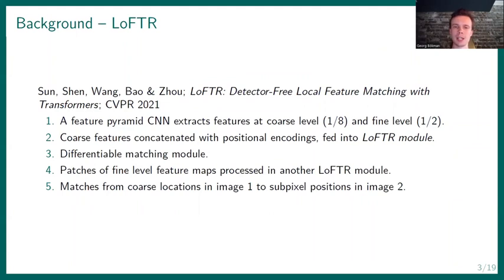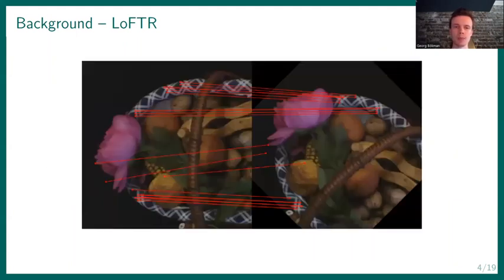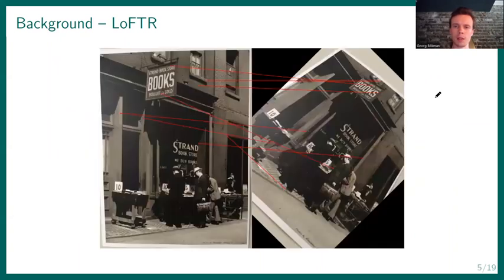Let's take a look at some failure cases of LoFTR on rotated images. Here's one. Here LoFTR only finds incorrect matches and the matches it finds are on this very repetitive structure. Here's another example. It only finds incorrect matches. And here we see a reason why. For instance, this match here is very similar between the two images. There's a lighter region to the lower right and a darker region to the upper left, but it's an incorrect match.